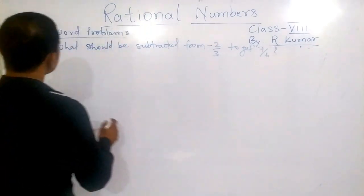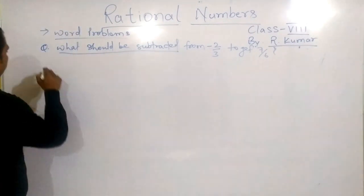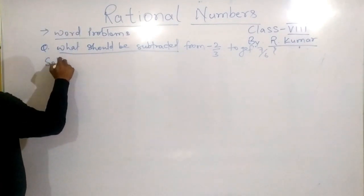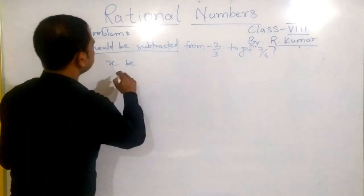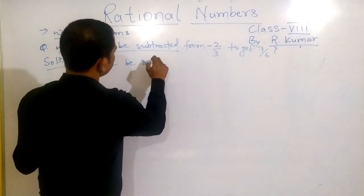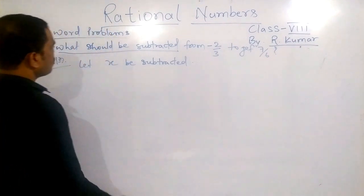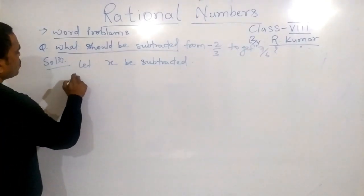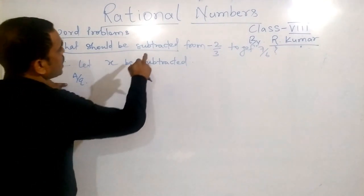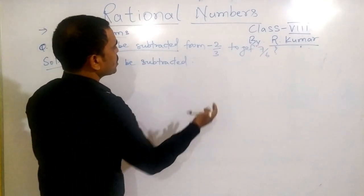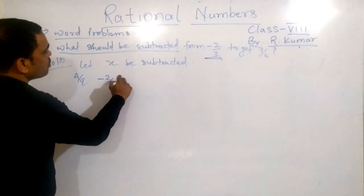Once again, you read the question carefully. What should be subtracted - you say in the solution: let x be subtracted. Now if we go through this question, we write according to the question: x is subtracted from this value, means minus 2 by 3 minus x equals to 7 by 6.